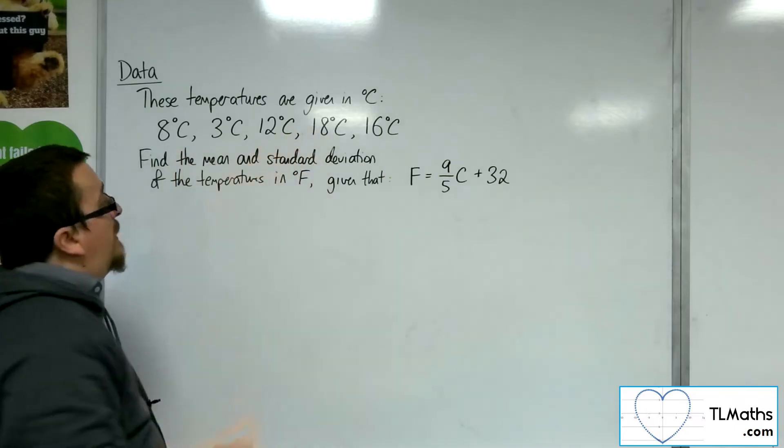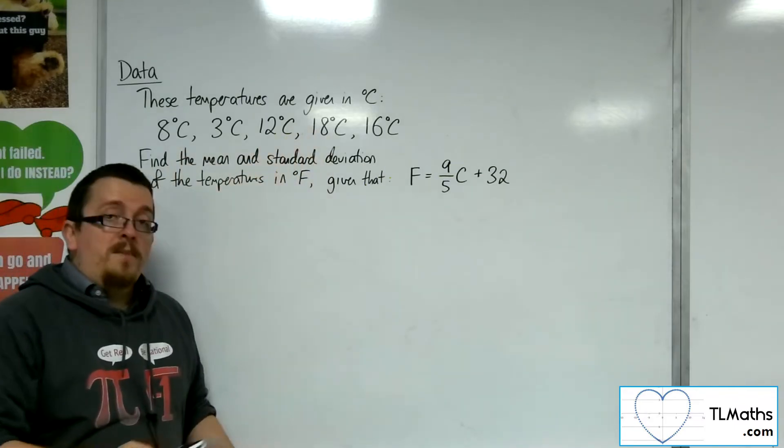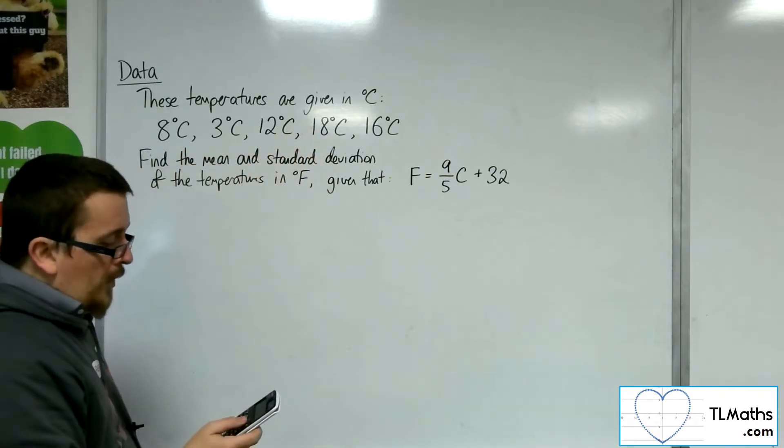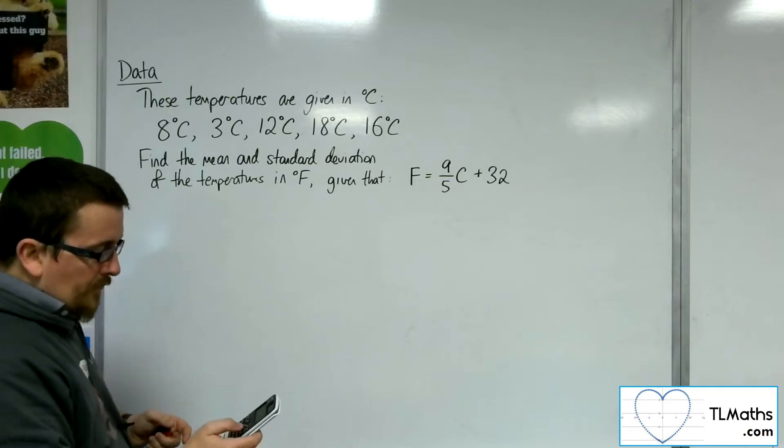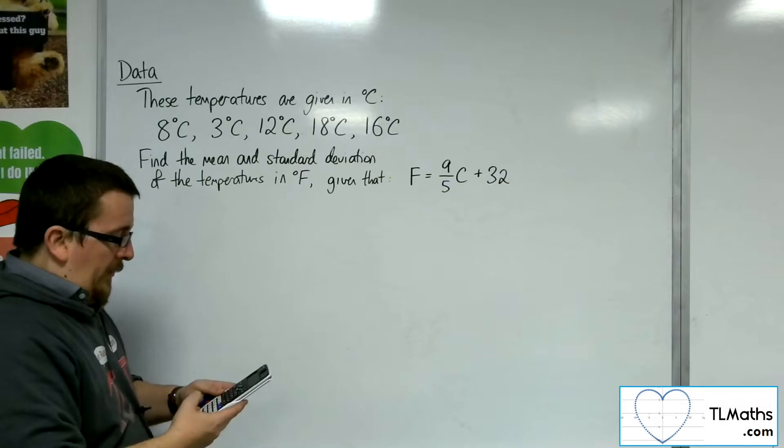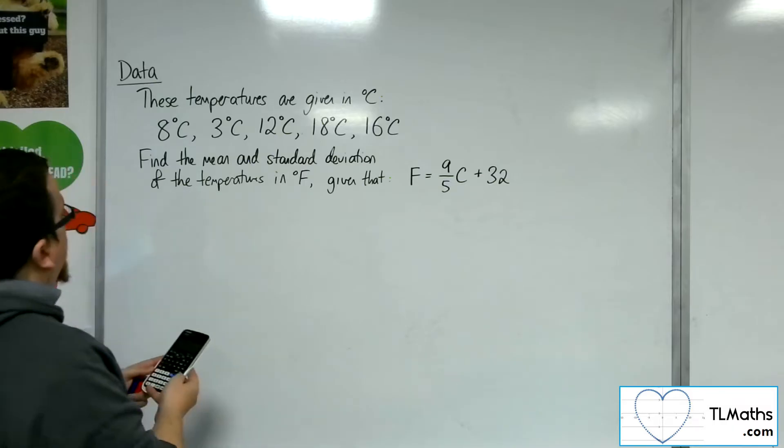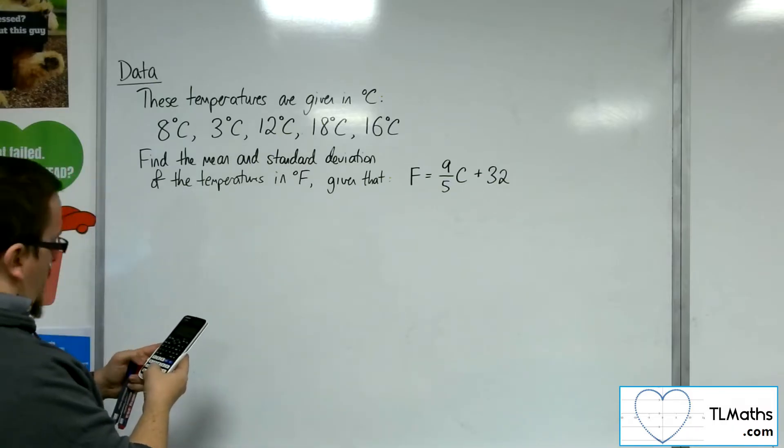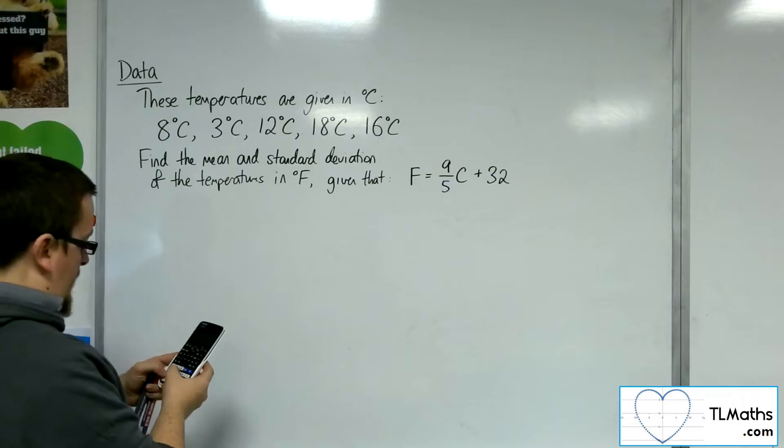So I'm going to type those numbers into my calculator to find the mean and standard deviation first of the original set of data. Menu, and then number 6, and one variable. So let's type those in: 8, 3, 12, 18, and 16.